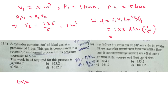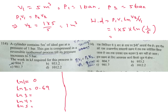Some standard values we have to remember: ln 1 is 0, ln 2 — this is very very important and is asked many times — ln 3 is 1.09, ln 4 is 1.38, and ln 5 is 1.6. If you remember these values, you can solve these types of questions.